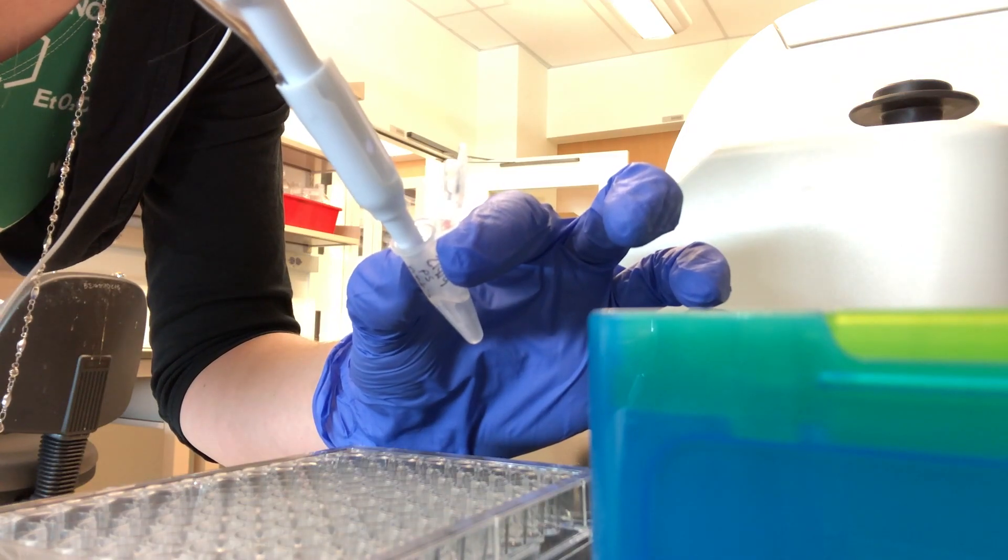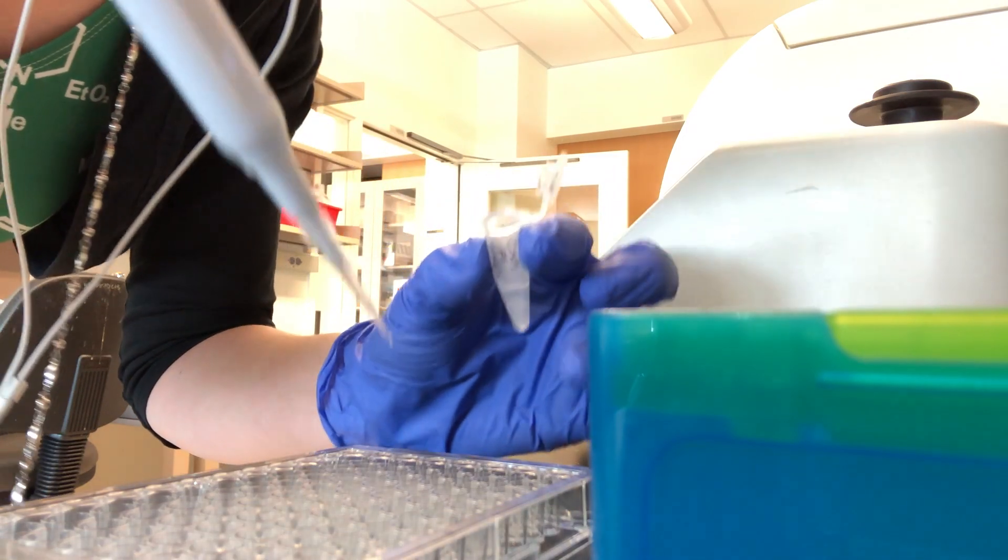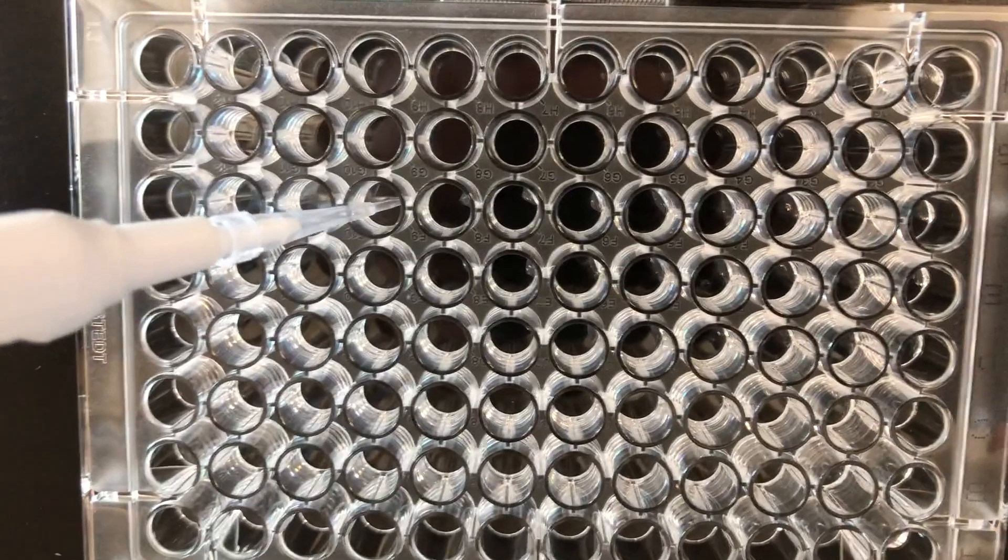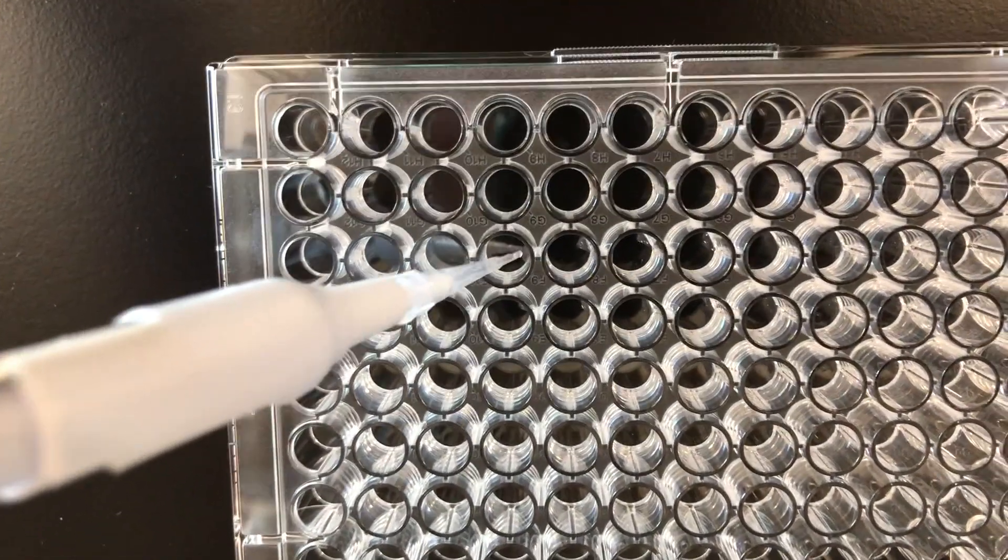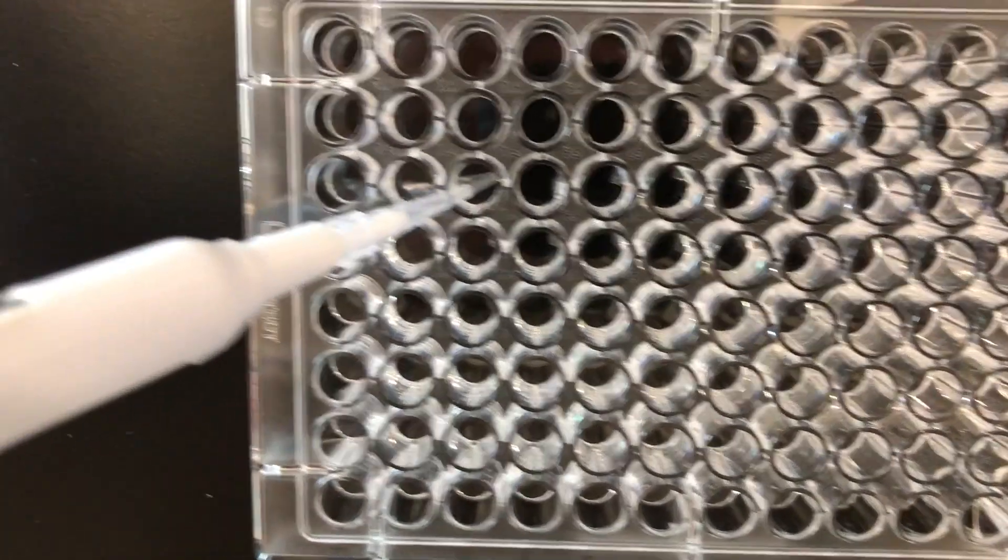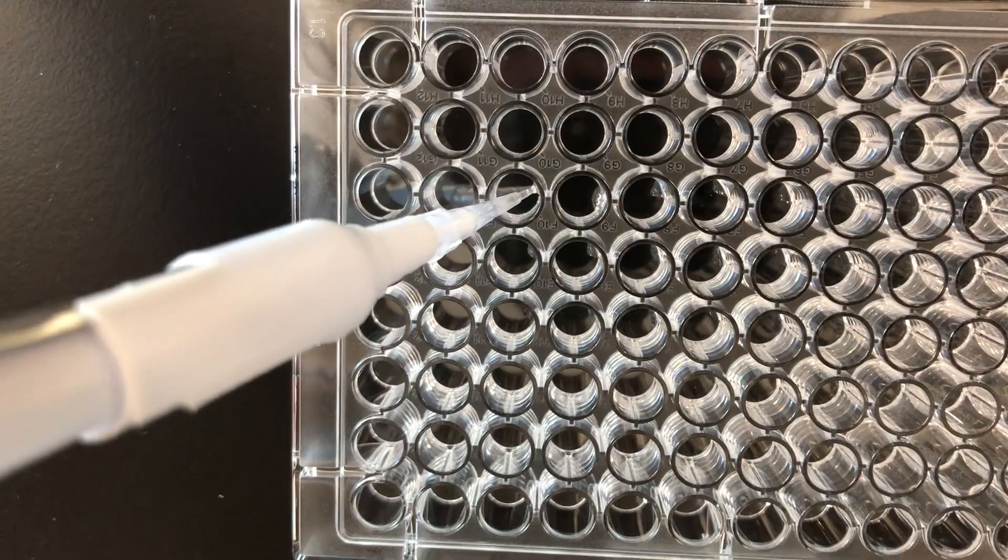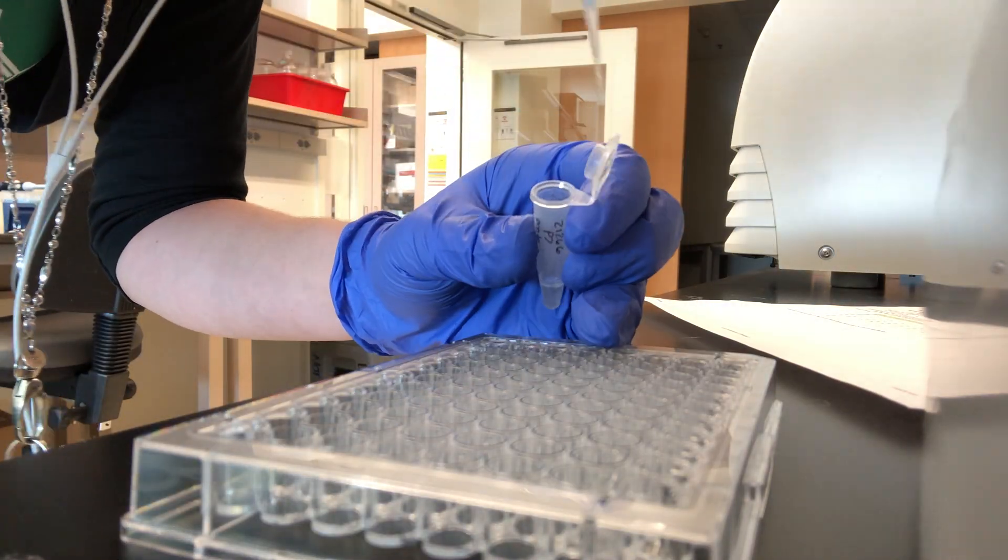Then I use a pipette to transfer a tiny amount of the protein solution into a well of a 96-well plate. As you can see, it's a very tiny amount, not much bigger than the period at the end of a sentence. I repeat that for each sample, doing each one in duplicate, meaning doing the same sample twice so that I can measure my accuracy.